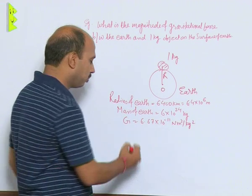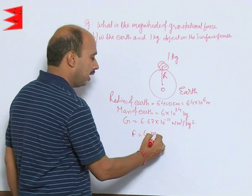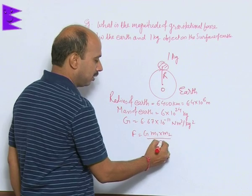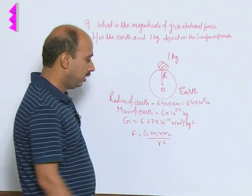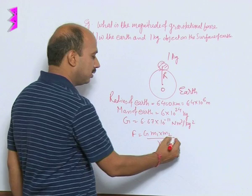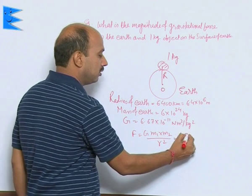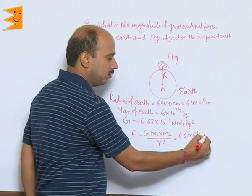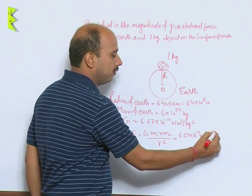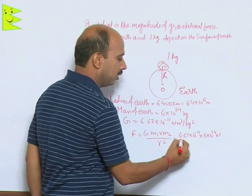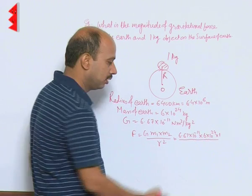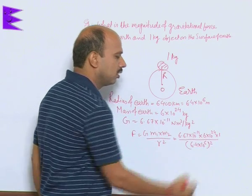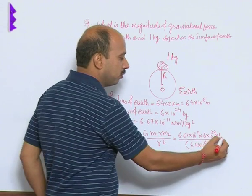Now, apply the formula F is equal to G m1 m2 divided by R squared. In place of R, we can write radius of Earth. So, 6.67 into 10 raised to power minus 11 into 6 into 10 raised to power 24 into 1 divided by 6.4 into 10 raised to power 6 squared. The unit is Newton.